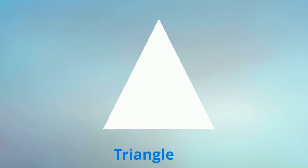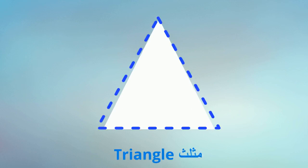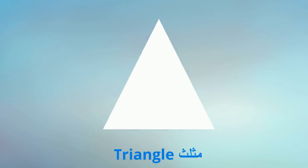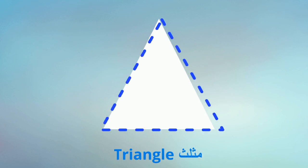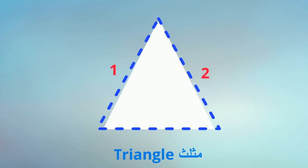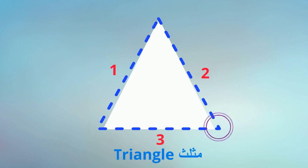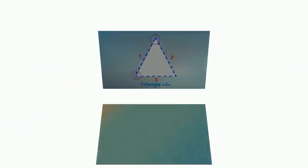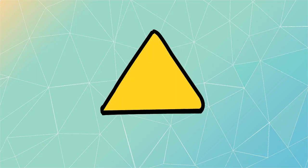Do you know, kids, what we call this shape? Perfect! This is a triangle. A triangle is a flat shape. It has 3 sides and 3 angles.